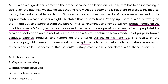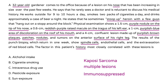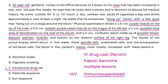The punch biopsy results show spindle cells, endothelial cells, and extravasation of red blood cells. The factor in this patient's history most closely correlated with these lesions — well, he's definitely got Kaposi sarcoma with multiple lesions, and he's most likely immunosuppressed. What's very significant is that he is an IV drug user; specifically, he tells you the drug is heroin. Most likely he's acquired HIV from heroin use, passing infected needles from person to person. That's causing the immunosuppression, and he has developed multiple Kaposi sarcoma lesions. The factor most closely related to these lesions is his IV drug use, so the answer is C.